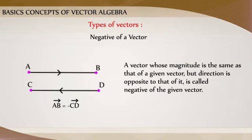Negative of a Vector: A vector whose magnitude is the same as that of the given vector but direction is opposite to it is called the negative of the given vector.